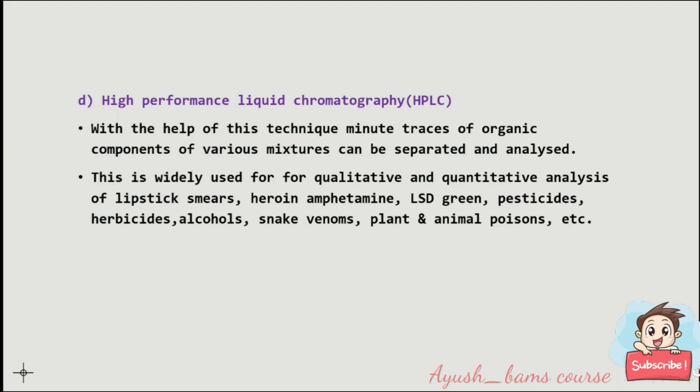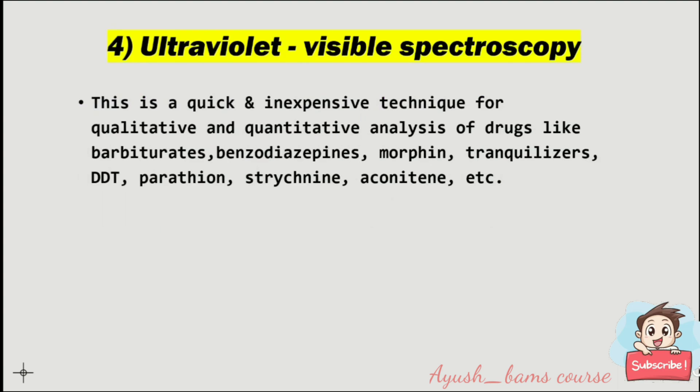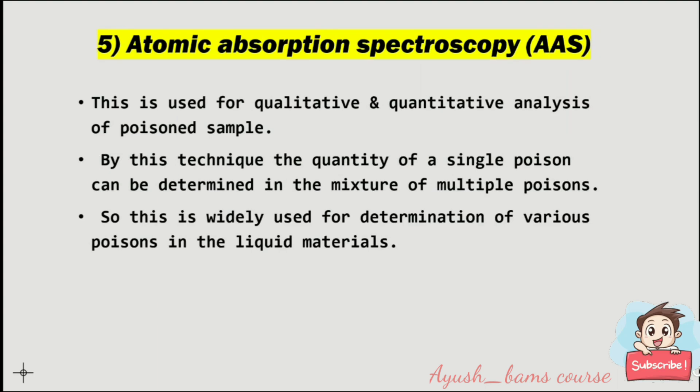Ultraviolet-visible spectroscopy is a quick and inexpensive technique for qualitative and quantitative analysis of drugs like barbiturates, benzodiazepines, morphine, tranquilizers, and DDT.